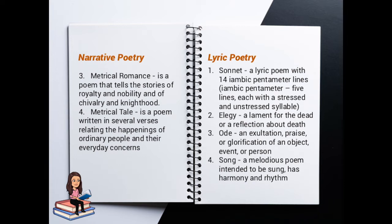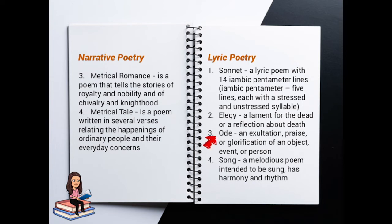Meanwhile, the examples of lyric poetry include the sonnet. What do we mean by iambic pentameter? It means having five lines, each with a stressed and unstressed syllable. Number 2, elegy — a lament for the dead or a reflection about death. Number 3, ode — an exultation, praise, or glorification of an object, event, or person. And lastly, number 4, song — a melodious poem intended to be sung, with harmony and rhythm.